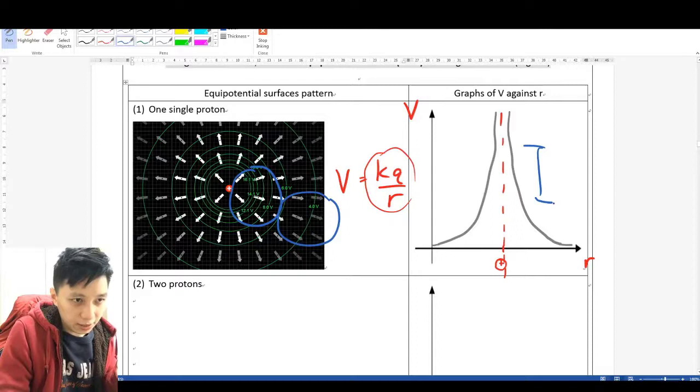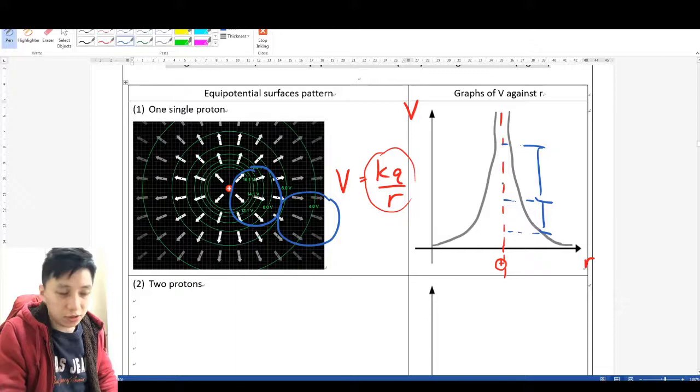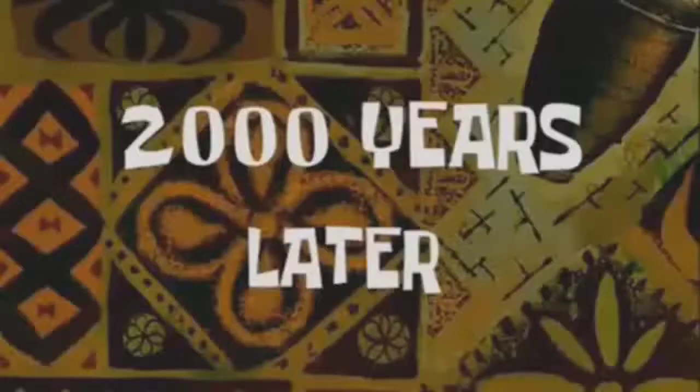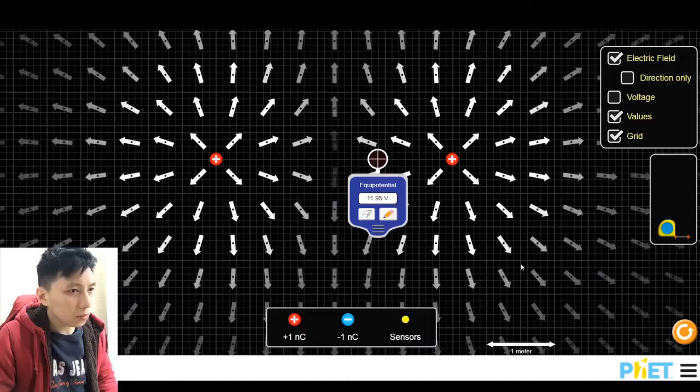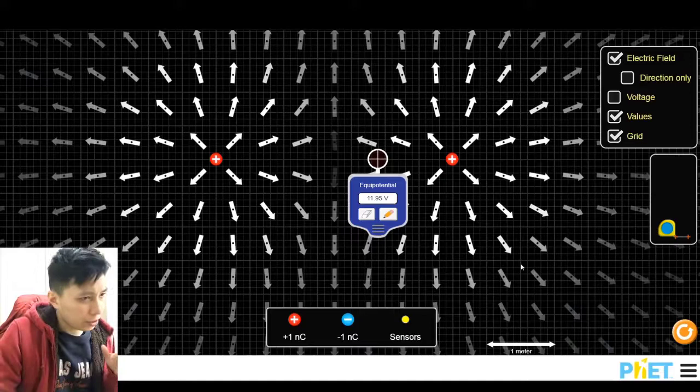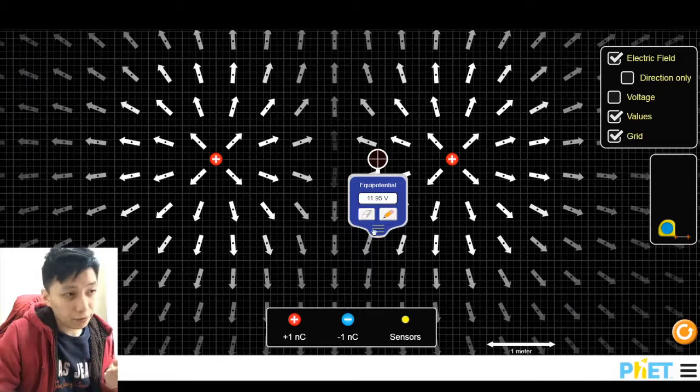Case number two, two protons. So now go and do it yourself on the simulation. Pause the video now. Two thousand years later. Let me also demonstrate. So here is how I place the two protons. And your decision may be slightly different. And that would yield a different result in terms of the V and also the pattern slightly. But overall, the whole pattern should be very similar.